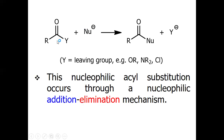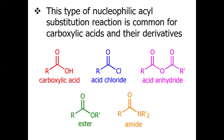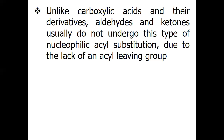The first step is the addition step and the second step is the elimination step. By reacting carboxylic acid with different nucleophiles, we may obtain different derivatives — such as acid chloride, acid anhydride, ester, or amide — and these are very common derivatives. Unlike carboxylic acids and their derivatives, aldehydes and ketones usually do not undergo this type of nucleophilic acyl substitution, because of the lack of a good acyl leaving group.